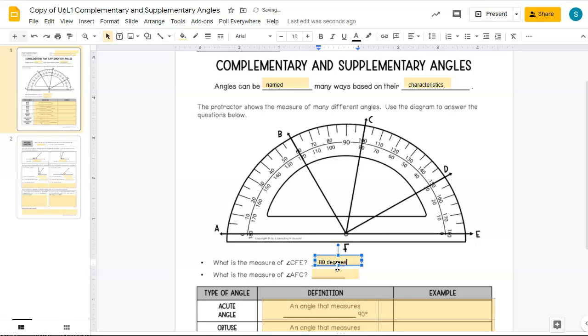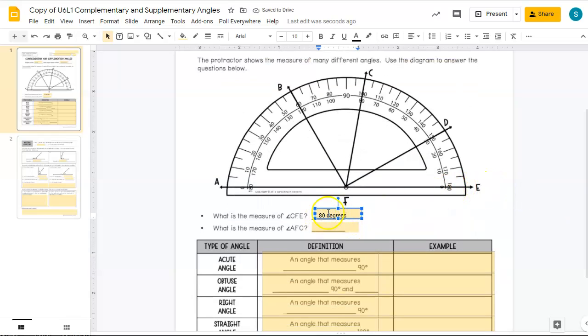Now, often we're going to use a small circle, sort of like in the exponent position for a degree. However, that is not easy for me to type right now, so I'm just going to type 80 degrees. Now, let's look at angle AFC. Here's our zero point. We're actually going to count on the outside. So we've got 0, 10, 20, 30, 40, 50, 60, 70, 80, 90, 100 degrees. So this one is 100 degrees, and that's a measure of the angle.